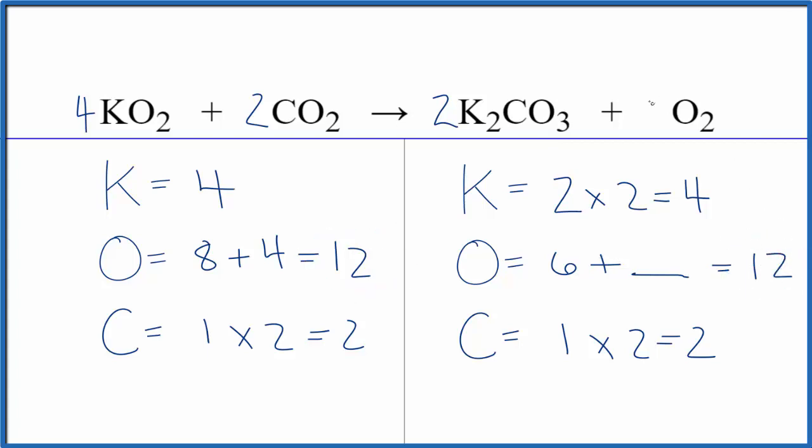Six plus six is twelve. We put a three here. This three times two is six. We get twelve. We're done. This equation is balanced.